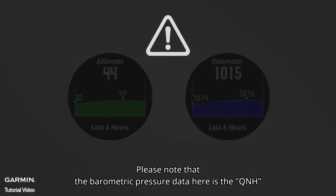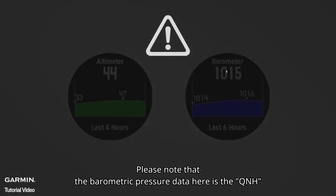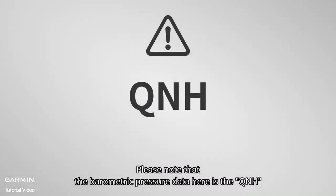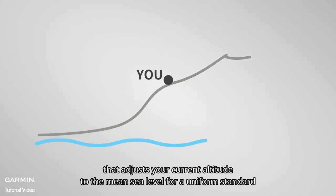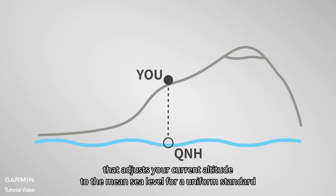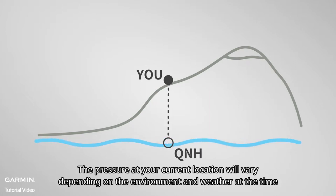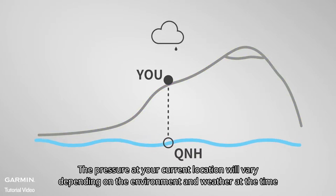Please note that the barometric pressure data here is the QNH, which means it is the atmospheric pressure adjusted from your current altitude to the mean sea level for a uniform standard. The pressure at your current location will vary depending on the environment and weather at the time.